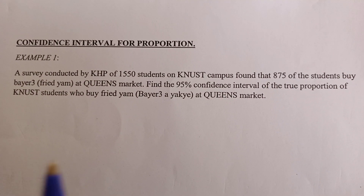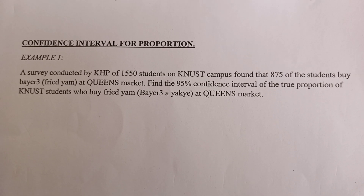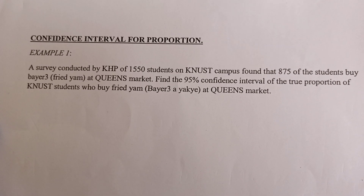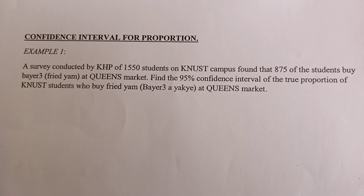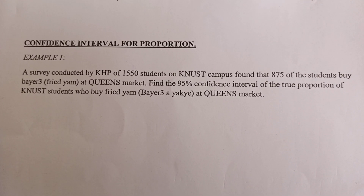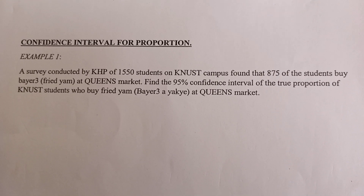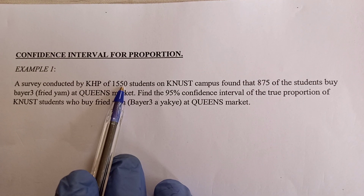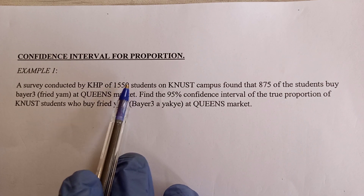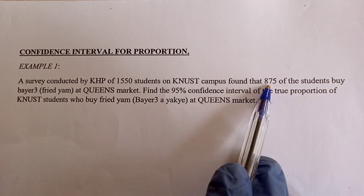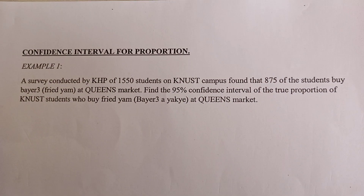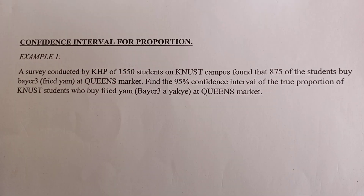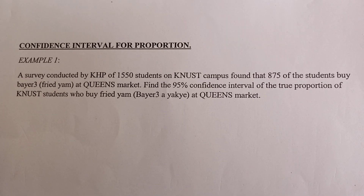You want to know the proportion of the entire KNUSD student population who buy their fried yam at Queen's Market, even though they sell at other places as well. To find this, you take a sample of 1550, and out of this 1550, you find that 875 of them actually buy from there, meaning the rest do not. So you want to use this sample to estimate the proportion of the entire population that buy from them.